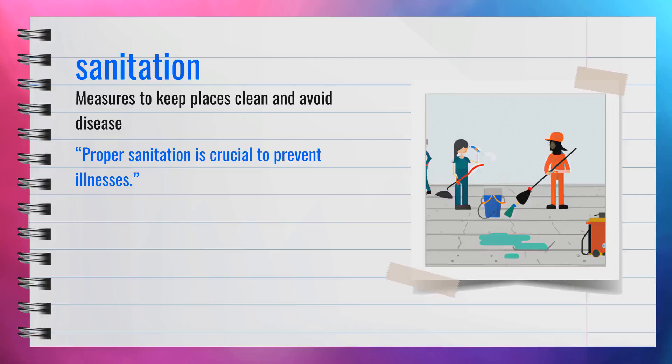The word sanitation, spelled S-A-N-I-T-A-T-I-O-N, is a noun. It means measures to keep places clean and avoid disease. For example, proper sanitation is crucial to prevent illnesses. In summary, sanitation refers to practices that maintain cleanliness and hygiene.